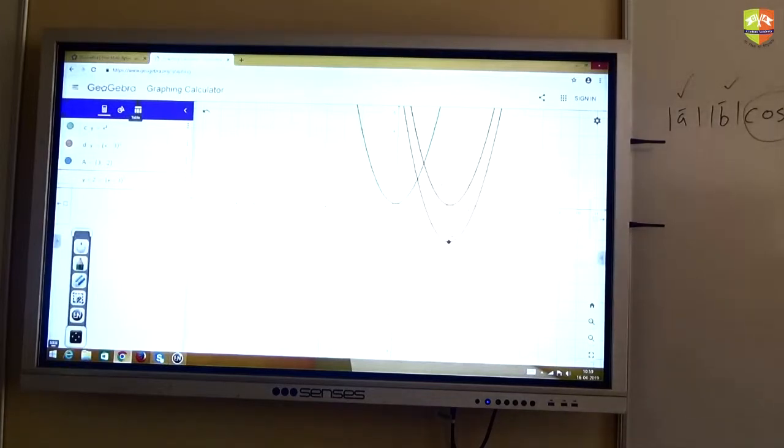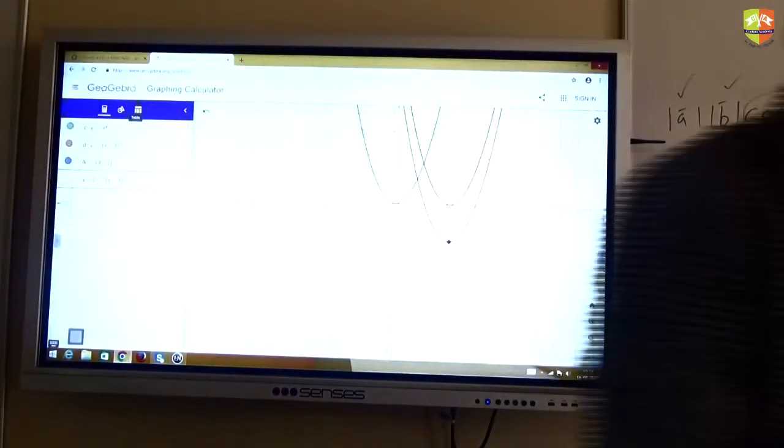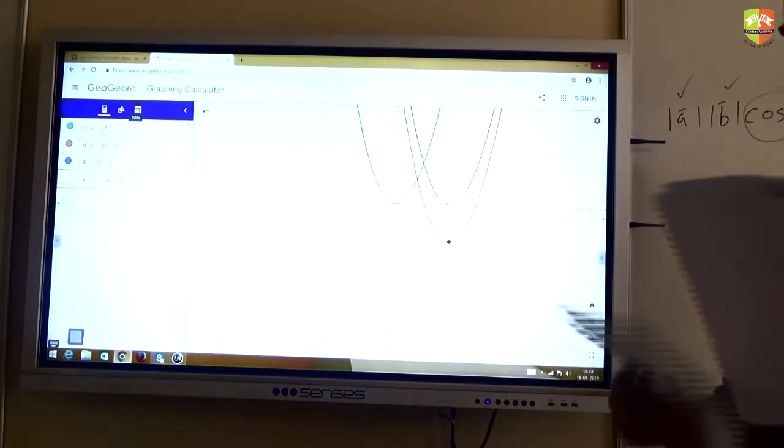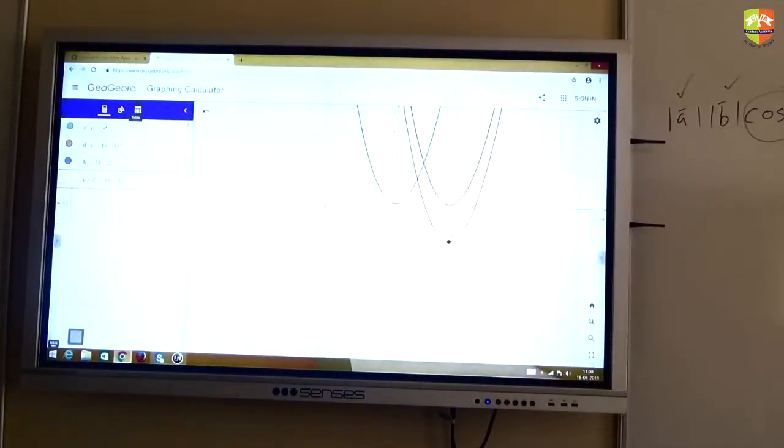Now next function that I will give you. I will use the board also simultaneously. Now many a times, many a times the function given to you will not be as straightforward as what I gave you just now. They may ask you: plot y equals x square, in fact that's the question in your worksheet as well. Y equals x square minus 8x plus 3. Now how will you plot this? It is not factorizable and we don't need to do that. Think, think how can you do this?